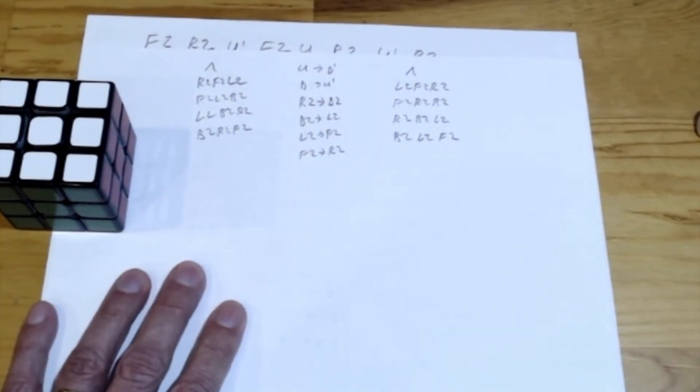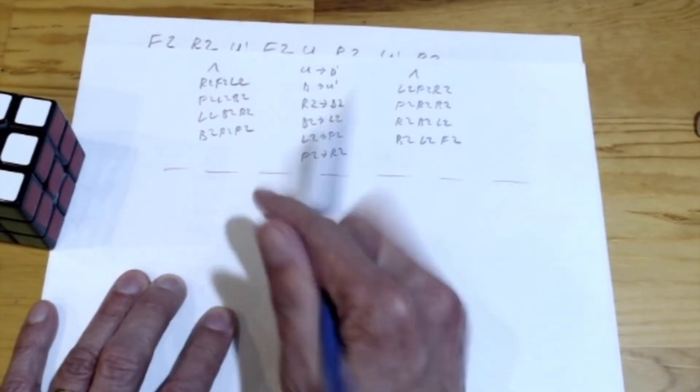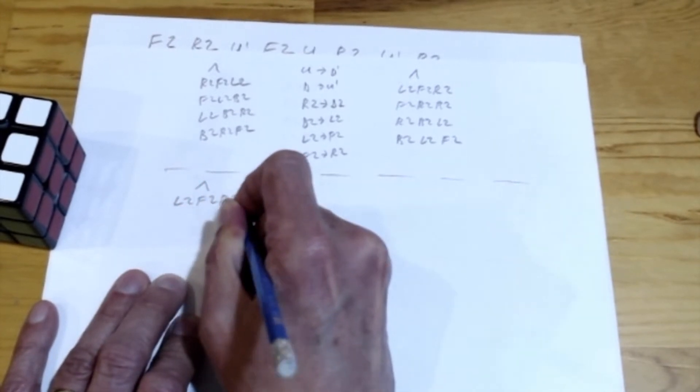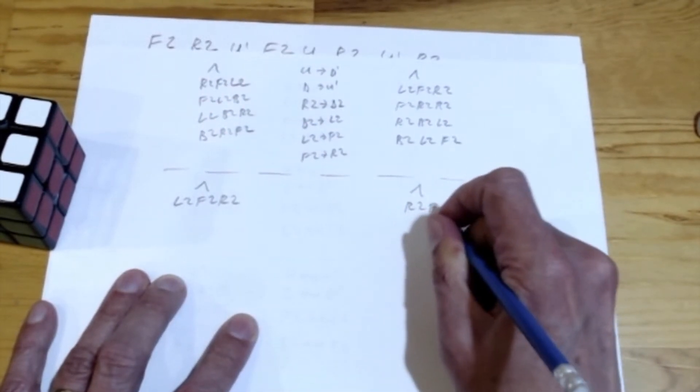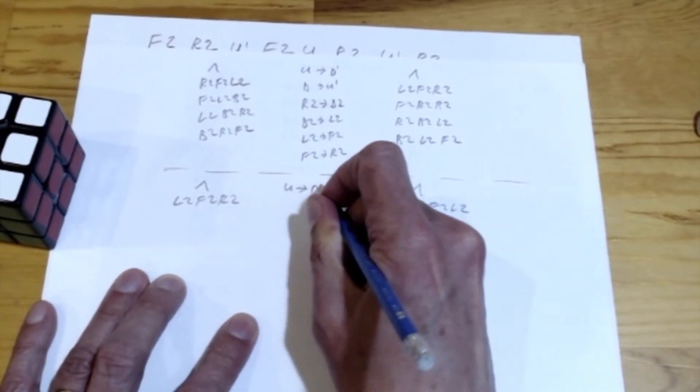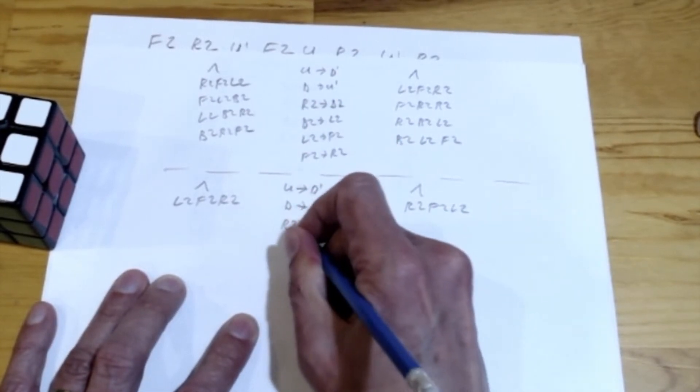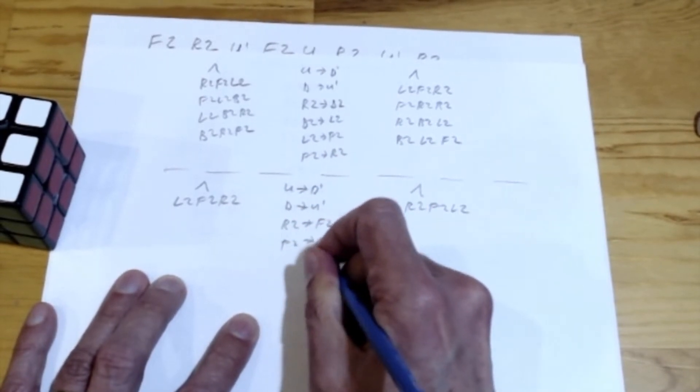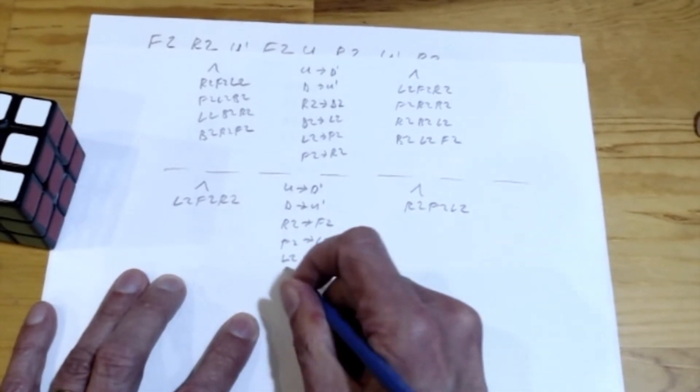And then there's the mirror of that one, which looks like starting with this direction and ending with this direction. So here I can do L2 F2 R2, etc. And here I do R2 F2 L2, etc. And then the transformation is different. U to D prime, it's in the different direction. D to U prime, R2 goes to F2, F2 goes to L2, L2 goes to B2, and B2 goes to R2.